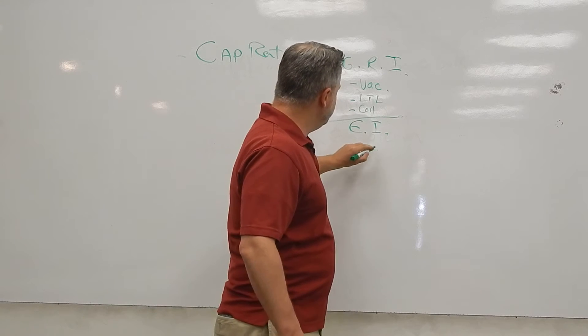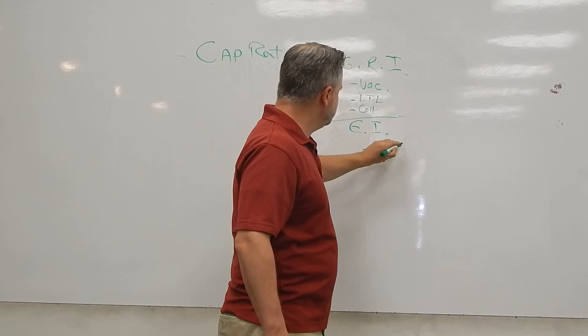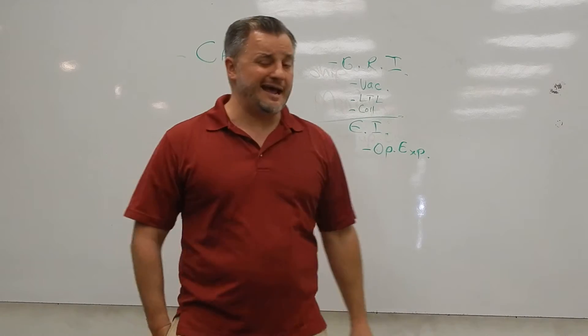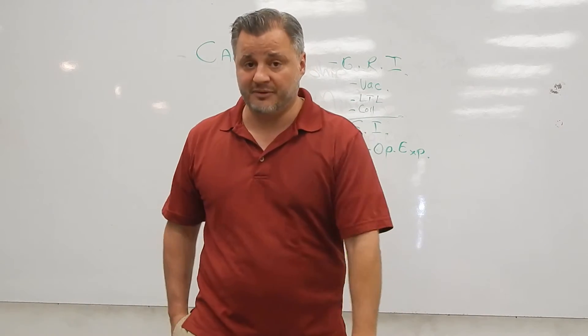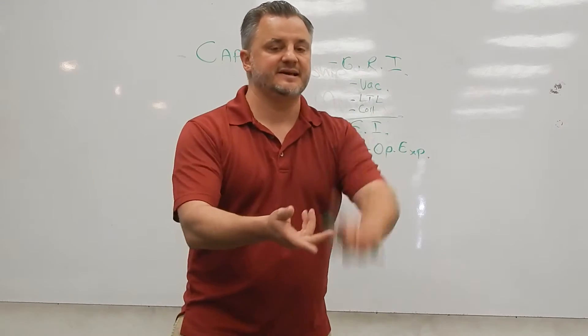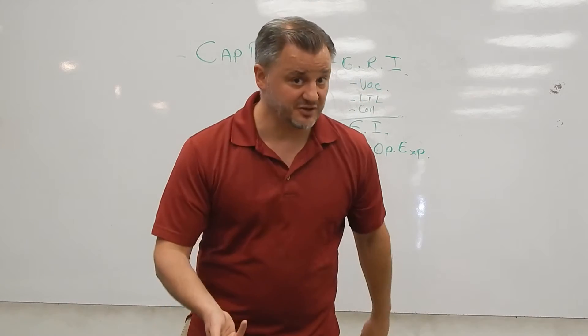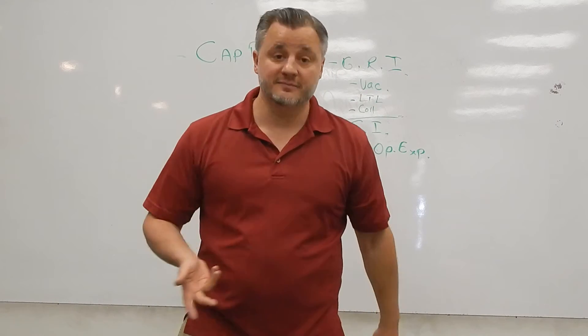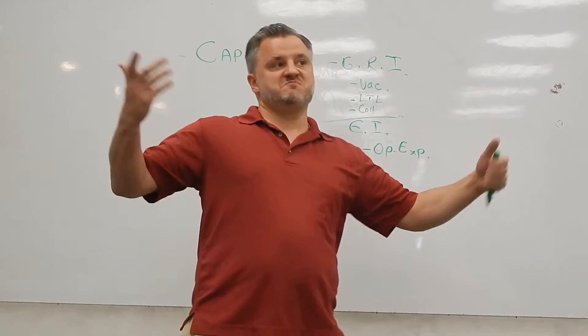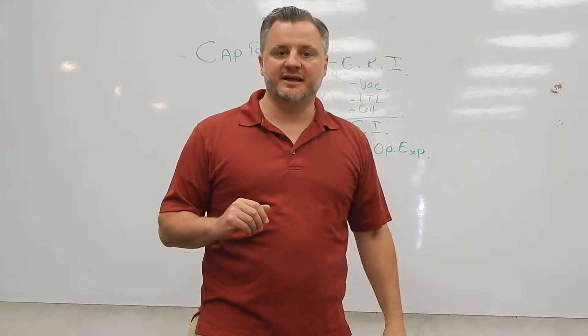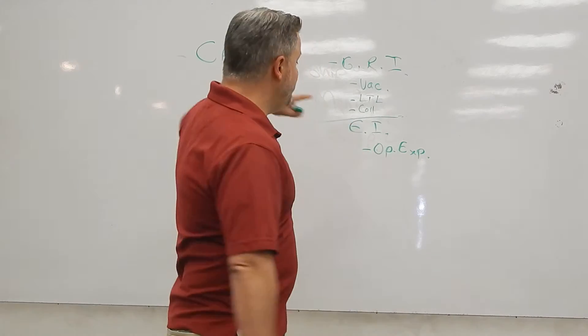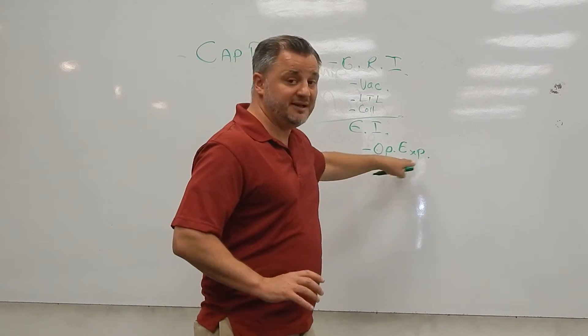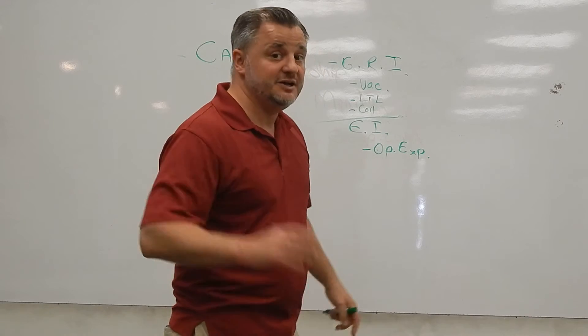Then you're going to take out the operating expenses. Operating expenses are pretty much everything that it takes to operate the property. Those are things like real estate tax, maintenance expenses, management costs, insurance, landscaping, snow removal, leasing commissions. I'll keep riffing here off the top of my head. There's other things that may come up to run the property. The one thing that's not in the operating expenses is pretty much everything that it takes to run the property, except for your mortgage payment.